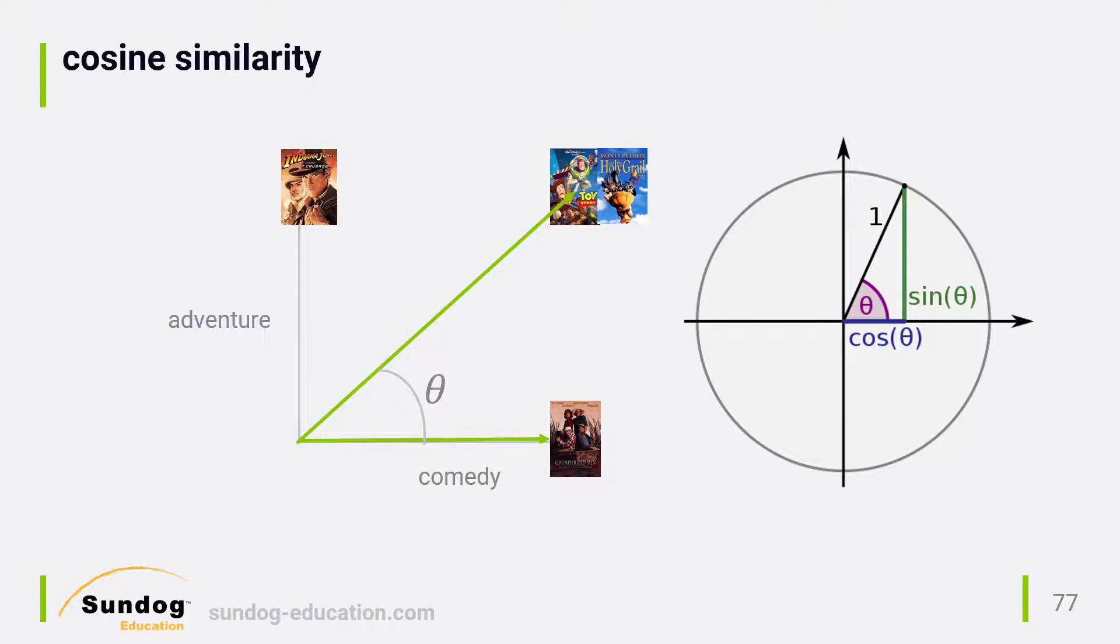Using the cosine has some other nice mathematical properties, since it's nice and smooth as a function. There are other ways to measure similarity, too. For example, Euclidean distance just looks at the actual distance between each item as you plot it. And Pearson correlation is similar to cosine similarity, but it takes the mean values of things into account. In the case of movie genres, though, cosine similarity is as good a metric as any.